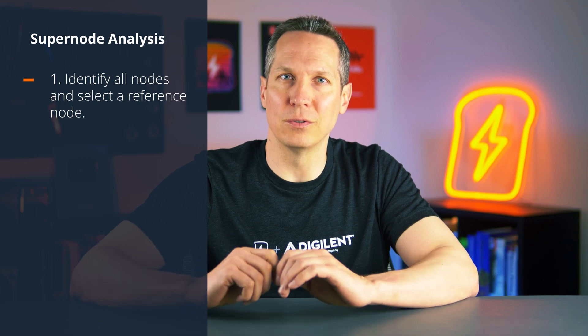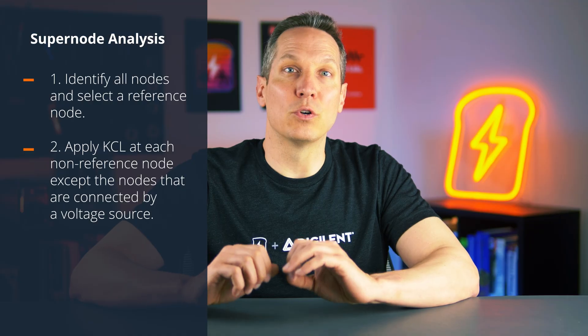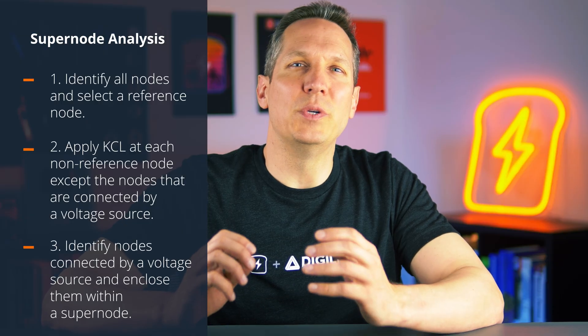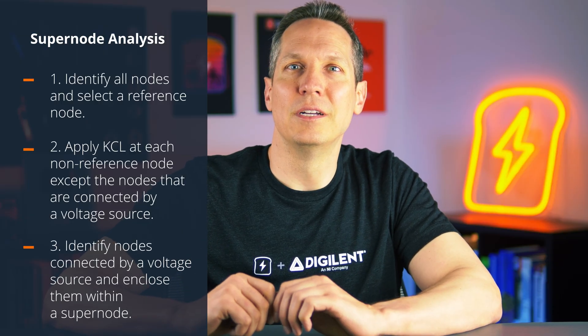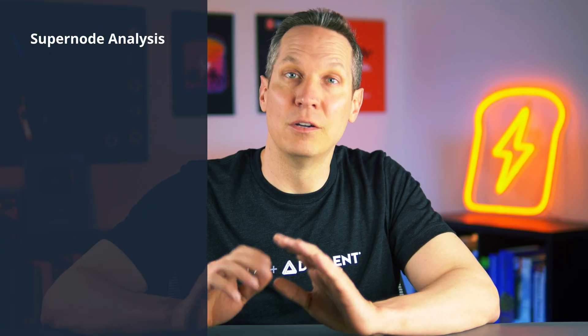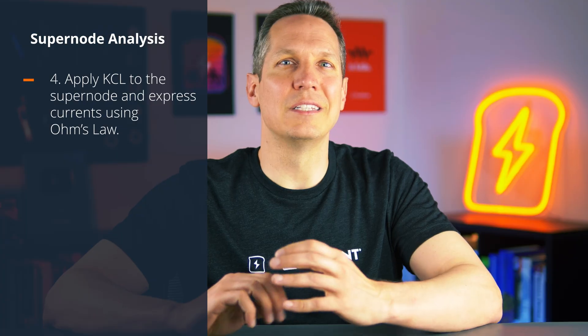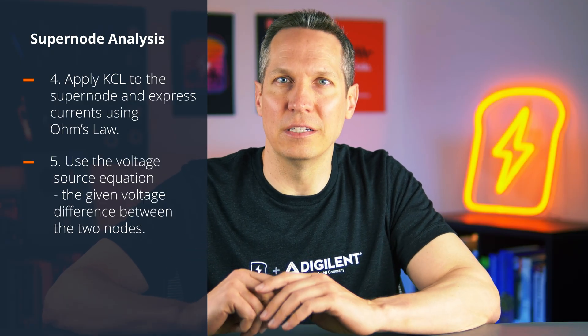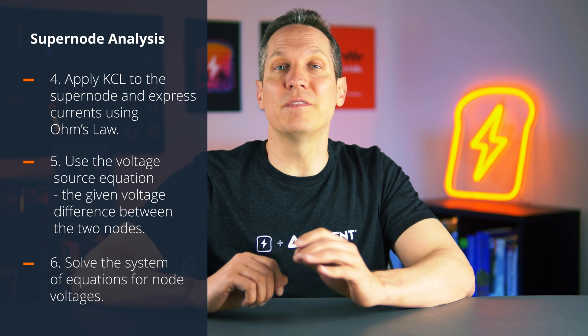The only difference is that there will be one equation that comes from the supernode. In summary, here's what we did to perform supernode analysis: First, identify the nodes and select the ground or reference node. Second, apply KCL normally to all nodes except the one with a voltage source between. Third, identify the voltage source between two non-reference nodes and circle all of them, treating them as a single supernode. Fourth, apply KCL to the supernode, considering all currents entering and leaving. Fifth, use the voltage source equation as an additional constraint. Finally, these sets of equations can then be used to find the node voltages.